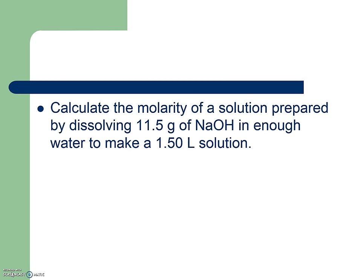So problems will look like this, and we're going to go through quite a few because they do get presented in a bunch of different ways. Calculate the molarity of a solution prepared by dissolving 11.5 grams of sodium hydroxide in enough water to make a 1.50 liter solution. So we're going to take 11.5 grams of NaOH, and we're going to use the gram formula weight of 40.0 grams of NaOH, and we're going to convert it to 1 mole of NaOH, and we're going to go ahead and do the math, and divide by 40, and we get 0.2875 moles.